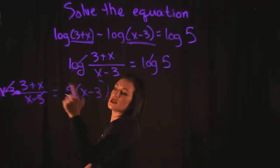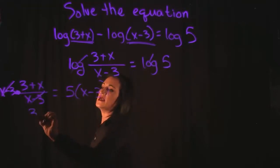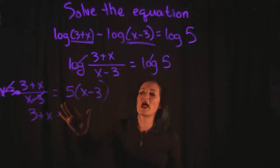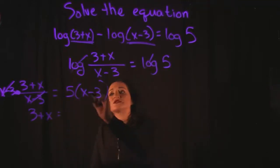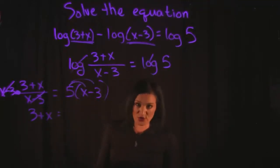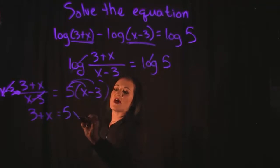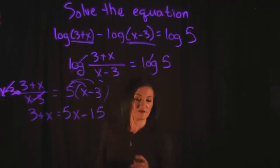That multiplication is going to cancel on the left hand side allowing me to drop down the 3 plus X. And on the right hand side we had 5, we're multiplying it to the X minus 3, so that means we are going to use the distributive property in order to multiply by that 5. So 5 times the X gives us 5X minus 5 times the 3 is 15.